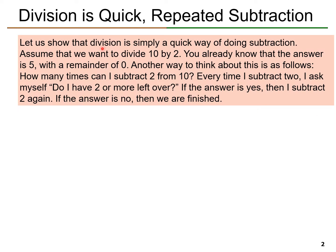Let us show that division is simply a quick way of doing subtraction with an example. Let's assume that we want to divide 10 by 2. You already know that 10 divided by 2 is 5, with a remainder of zero. However, another way to think about this is as follows: how many times can I subtract 2 from 10?